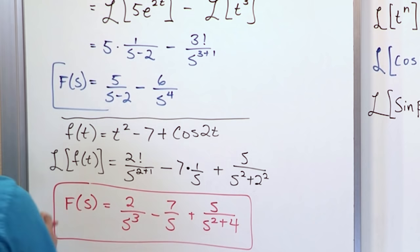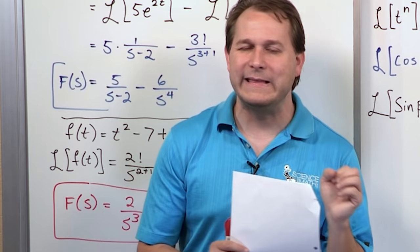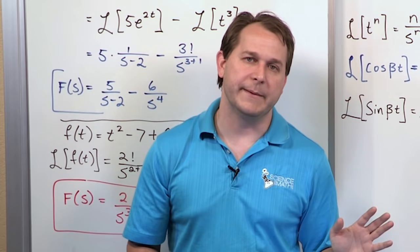2 over s cubed minus 7 over s plus s over s squared plus 4. This is the final answer. Notice again, this is a pure function of time. We have transformed into a pure function of s. If you end up with a Laplace transform that has anything other than just s's and numbers, you've done something wrong.